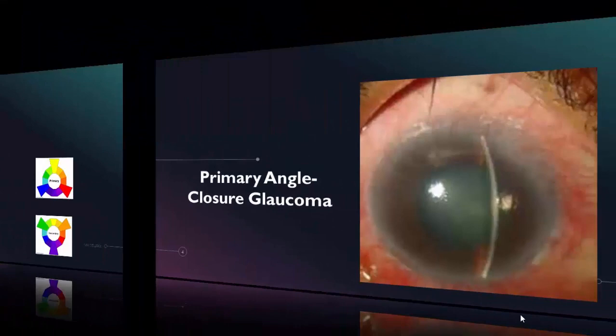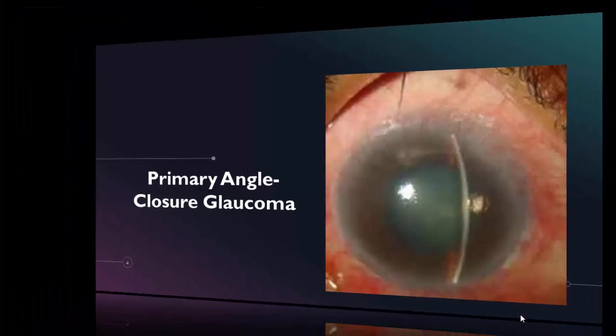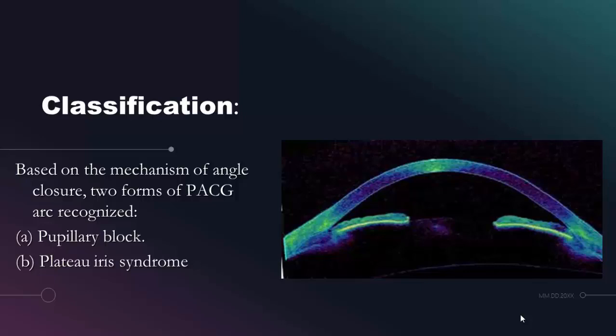Primary angle closure glaucoma is our topic today. Based on the mechanism of angle closure, there are two forms of primary angle closure glaucoma. The first is the pupillary block, and the second is plateau iris syndrome.